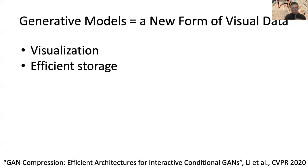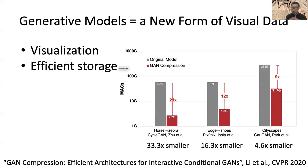If it's data, we also need to consider how to store it. How can we store generative models more efficiently and compactly? We are interested in compressing generative models like GANs to make them smaller and faster — similar to compressing a JPEG image, so that once it's smaller, you can upload and download it much faster.